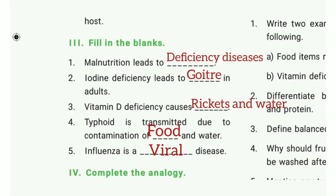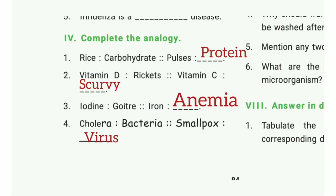Fifth one: influenza is a dash disease. The answer is viral disease. Complete the analogy. First: rice — carbohydrate; pulses — protein. Second: vitamin D — rickets; vitamin C — scurvy. Third: iodine — goitre; iron — anaemia. Fourth: cholera — bacteria; smallpox — virus.